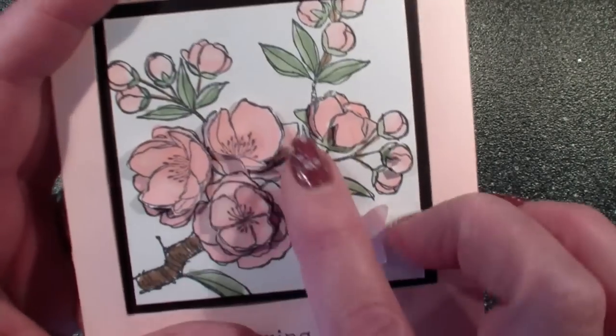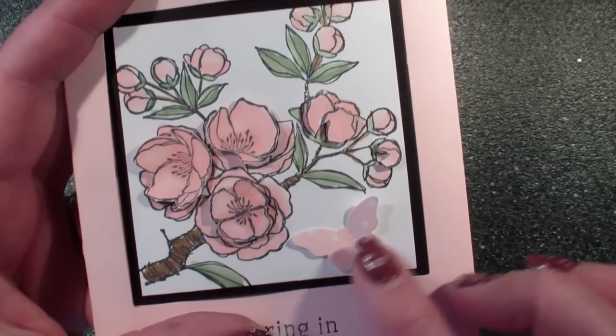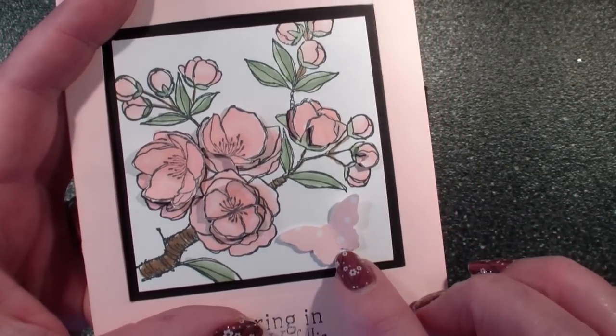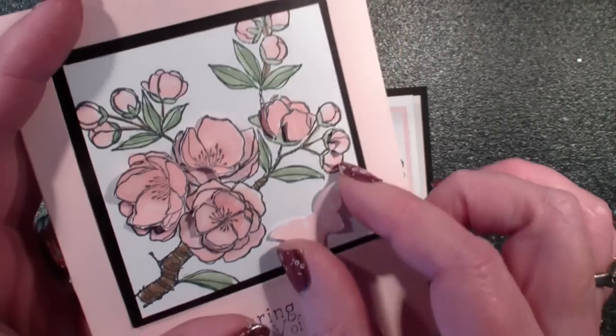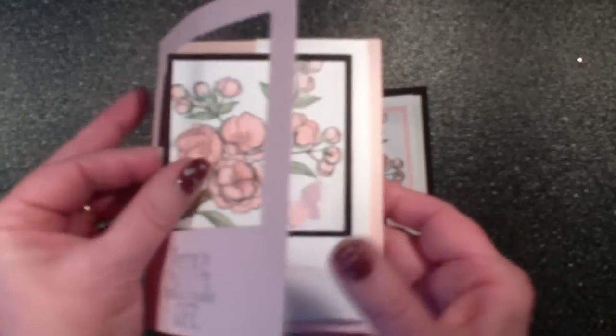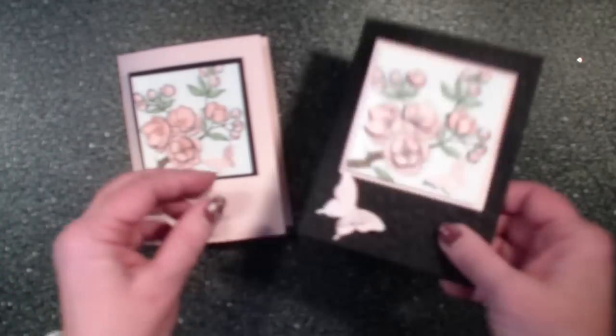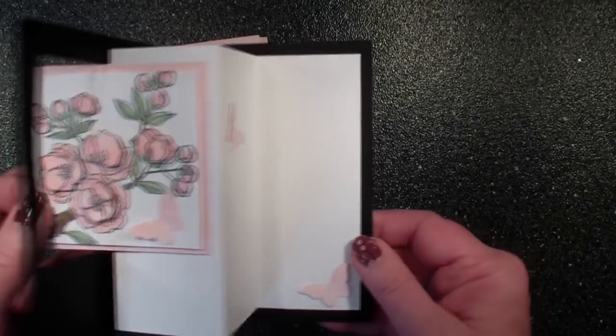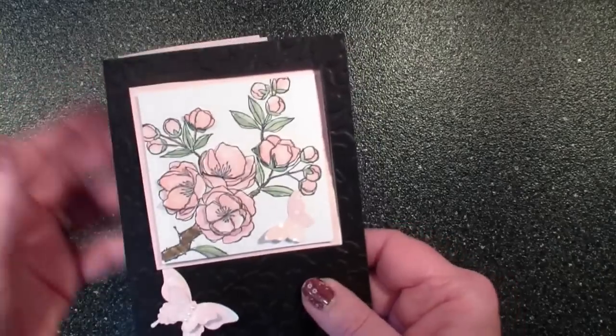As you can see I did a lot of detail with the blend abilities and used the irresistibly yours designer series paper that you get free during celebration to make little butterflies. But here is that swing card. This one is done in pink pirouette. This one is done with black as the card base and the pink pirouette as the accent. So let's get started so I can show you how I did that.